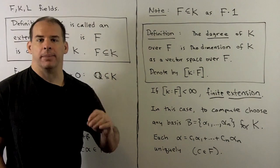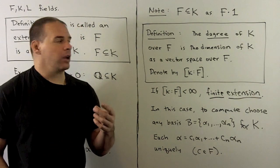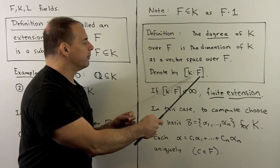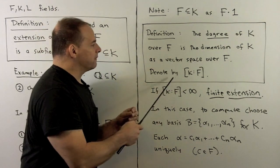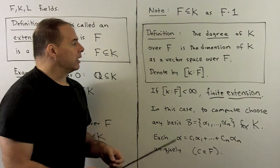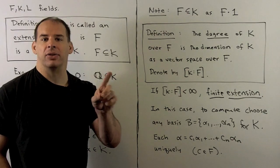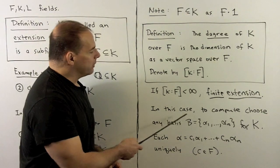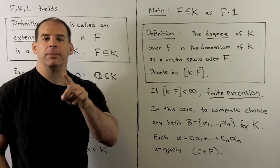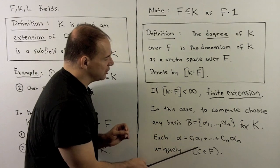Since we have vector spaces, we can talk about dimensions. Definition: the degree of K over F is the dimension of K over F as a vector space, denoted [K:F]. If the degree is a finite number, we say we have a finite extension. To compute the degree, we look for a basis of K over F and count the number of elements. If we have a basis α₁ through αₙ for K, we can write any element of K uniquely as a linear combination of the αᵢ's with coefficients in F.